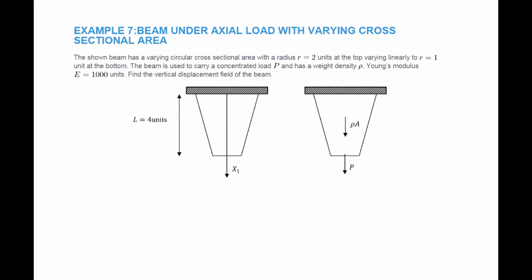We will now present an example of a beam under axial load where the cross-sectional area varies. One end is fixed and the other end has a force p acting on that cross-section. The beam has a weight density rho, so the load per unit length equals rho multiplied by the cross-sectional area. The cross-section is circular. The radius equals two units at the top and one at the bottom. Setting the top as x1 equals zero and the bottom as x1 equals L, the radius varies linearly from two at x1 equals zero to one at x1 equals L.